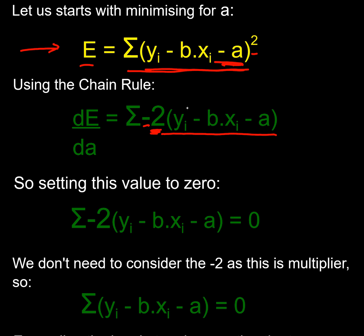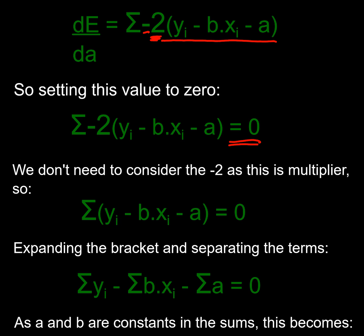And what am I going to do? I'm going to set that to zero — make it equal to zero for my turning point, a max or min. Now I've got a multiplier of negative two, but that's of no relevance when something equals zero. So I only need to know when the sum of this bracket equals zero. So I'm going to write it like that.